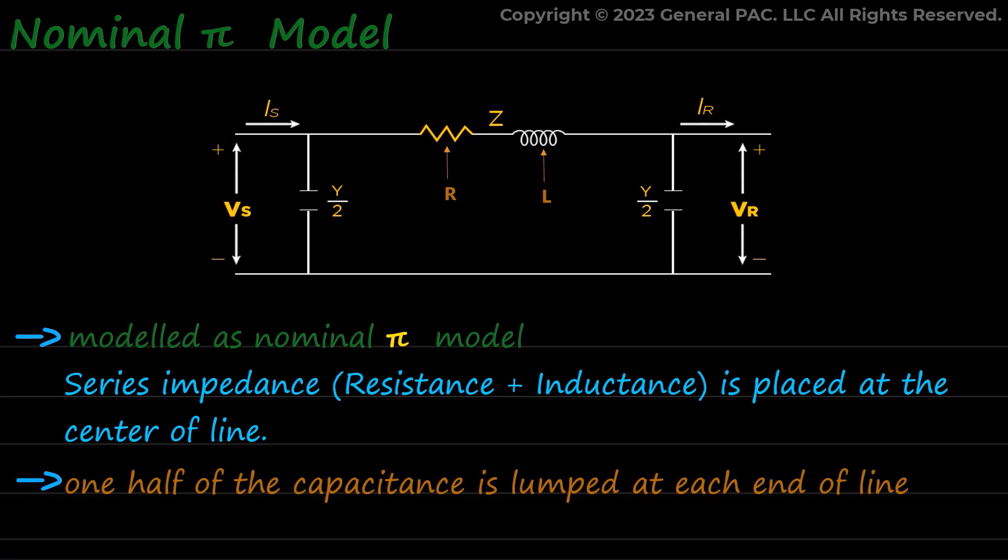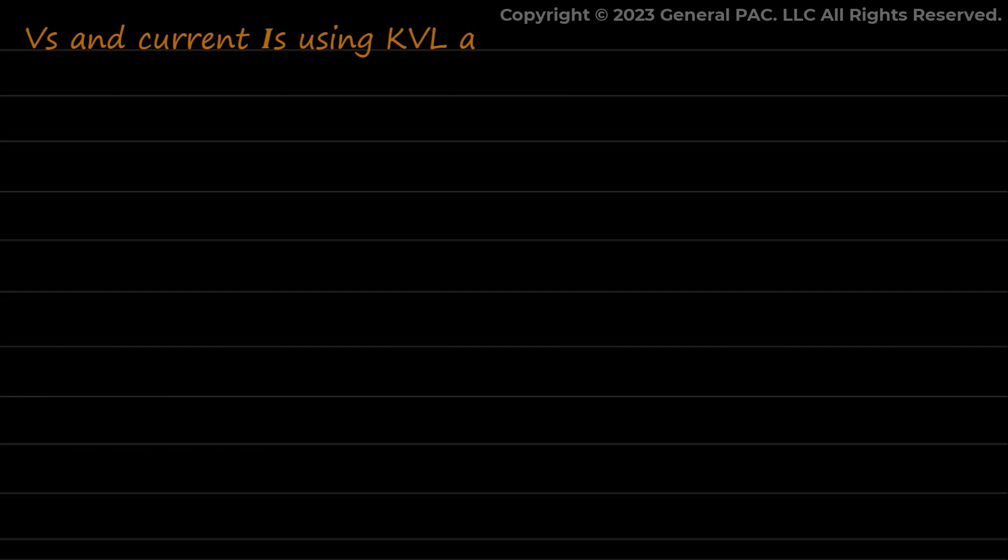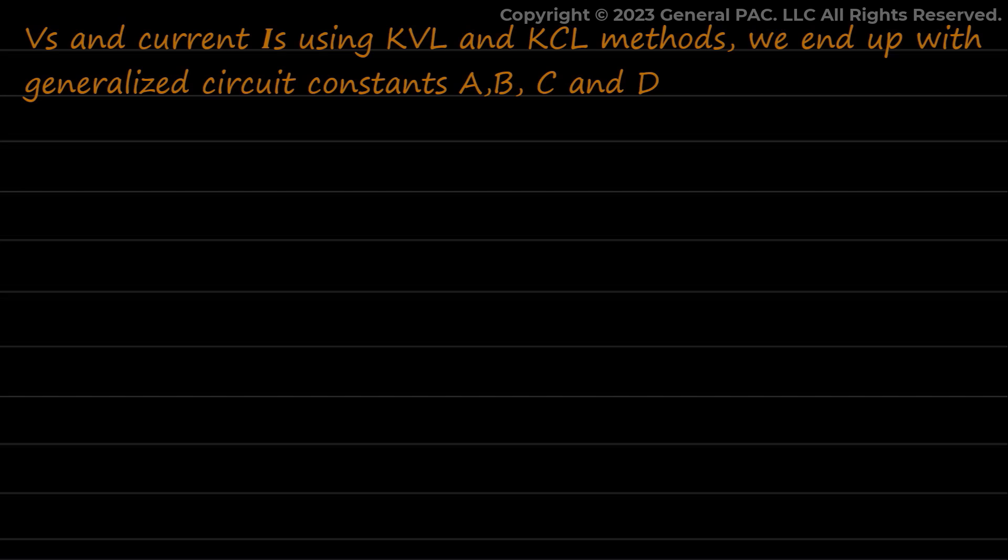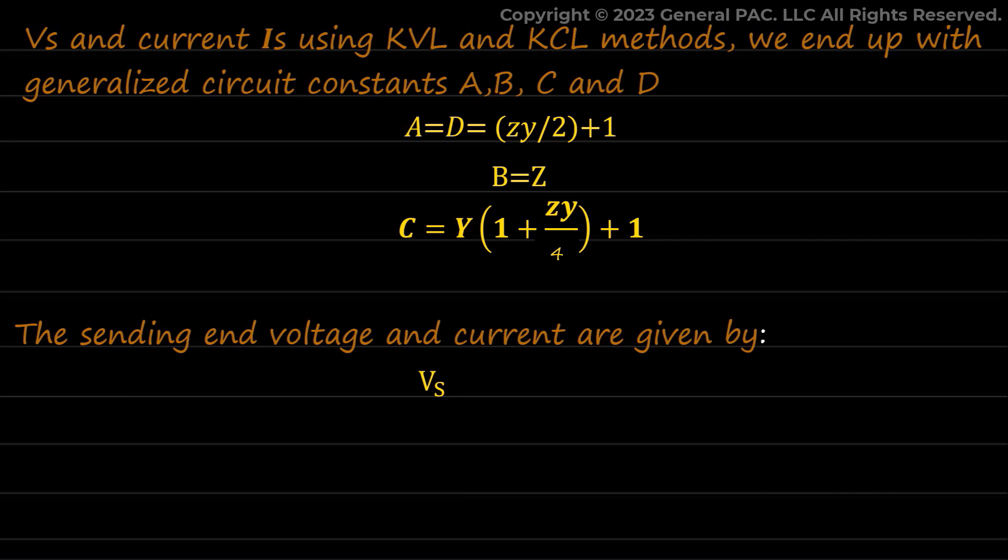After solving for sending end voltage VS and current IS using KVL and KCL methods, we end up with generalized circuit constants A, B, C, and D. That is, A equals D equals ZY/2 + 1, B equals Z, C equals Y(1 + ZY/4). The sending end voltage and current are given by VS = VR×A + IR×B and IS = IR×D + VR×C.